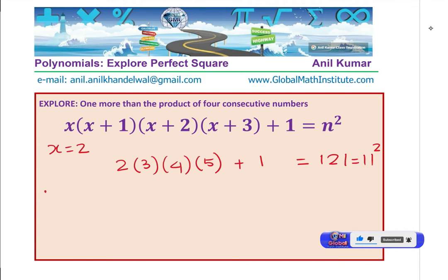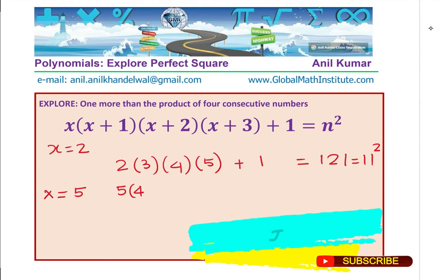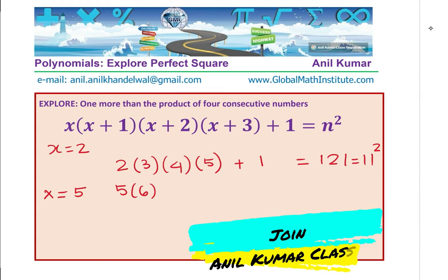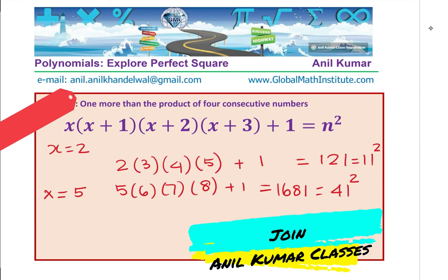If I extend this and say, let us take x equals 5. We could write this as 5 times 6 times 7 times 8 and then add 1 to it. As the numbers are becoming larger and larger, you can use your calculator just to verify. This time we get 1681. And if you do square root of 1681, you get 41. So this is 41 square. You can use calculator and figure it out. It means that we are always getting a perfect square. Make sense.